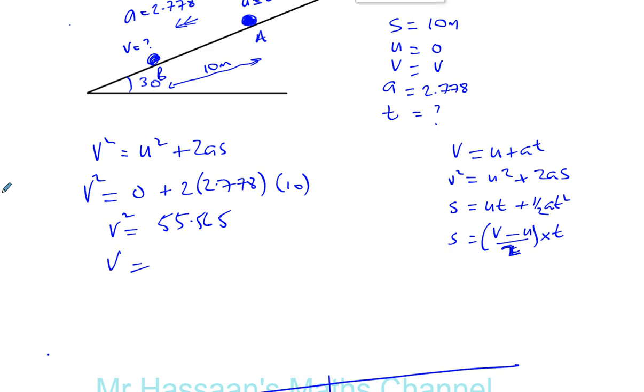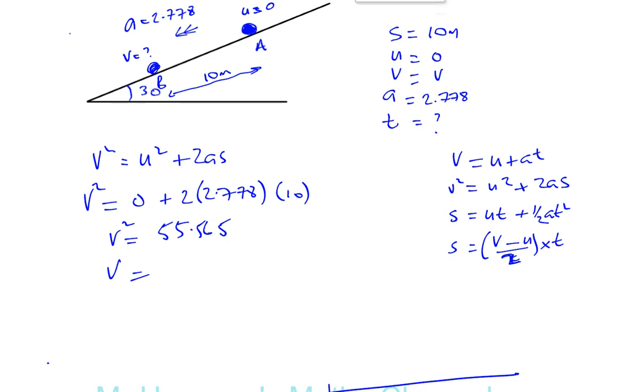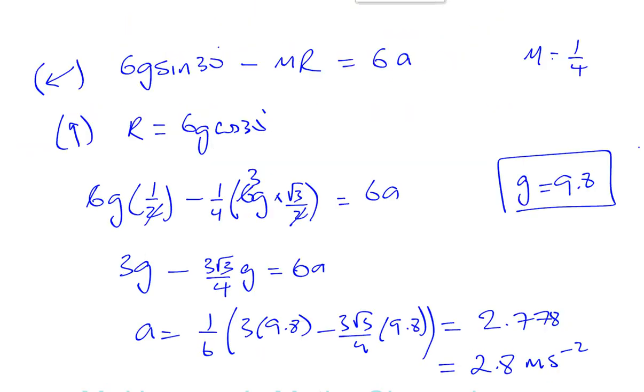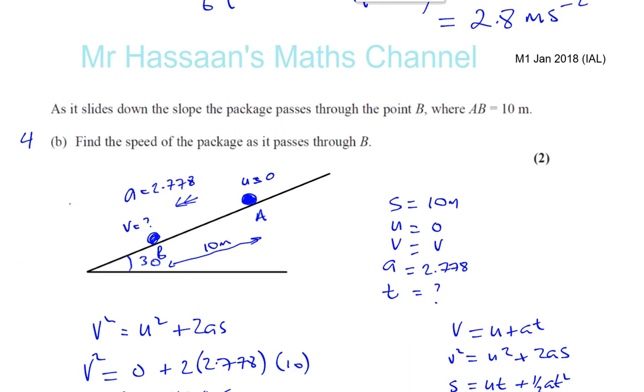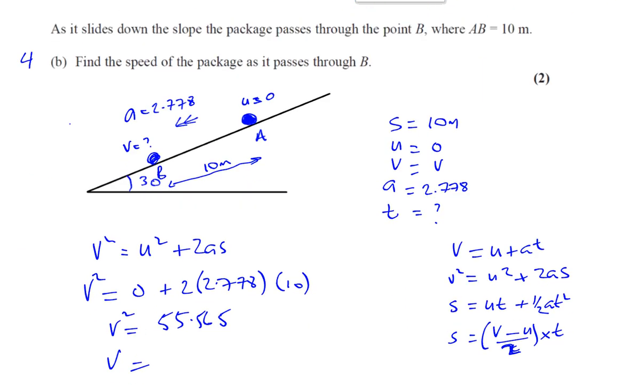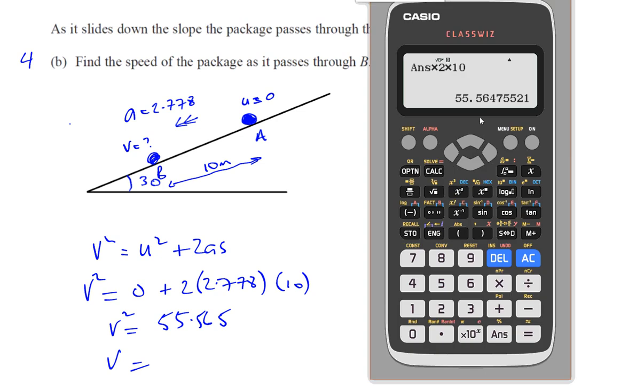So v is going to be the square root of that. The square root of the answer. v is going to be the square root of the answer, so we take what we have. That's exactly what we need there. Square root of the answer gives us 7.454.